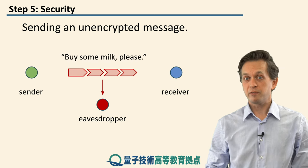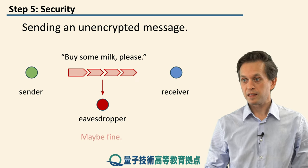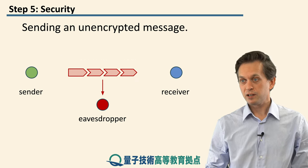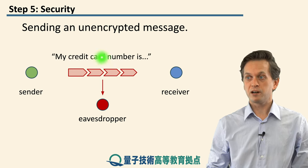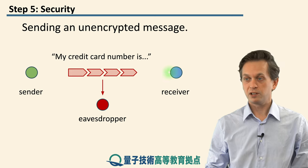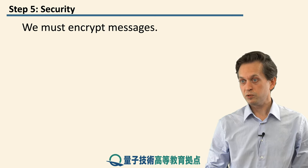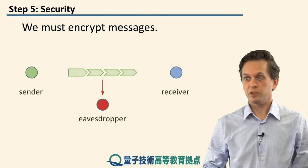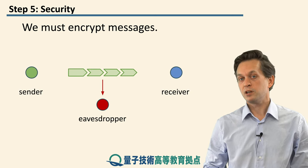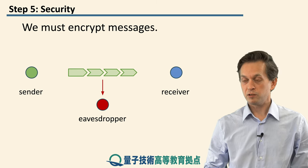If the message is something trivial, like 'buy some milk', this may not be a big problem. However, if the message is something more sensitive, like a credit card number, then this is a very serious issue. Therefore, what we do in classical communication is we encrypt the messages. We don't want anybody else gaining access to what we are sending, only the intended receiver.